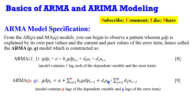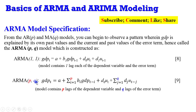Combining AR and MA gives us the ARMA(P,Q) model. An ARMA(P,Q) model is constructed when you have the lags of the dependent variable in addition to the lags of the error term — GDP is a function of P lags of GDP and Q lags of the error term.